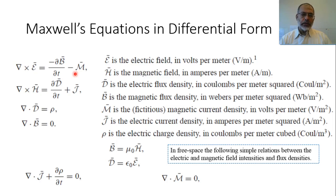So the electric field can be replaced by an equivalent magnetic current — not a real equivalence. The magnetic current would represent the electric field inside slots, for example.